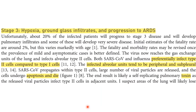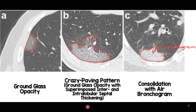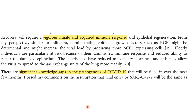From here, it progresses to Stage 3, where we have hypoxia, ground-glass infiltrates, and progression to ARDS. The cells preferentially infected are type 2 compared to type 1. The infected alveolar units tend to be peripheral and subpleural. On CT, we can demonstrate ground-glass appearance mainly in the peripheral, patchy, and subpleural areas — characteristic of COVID-19. Recovery usually requires a vigorous innate and acute immune response.